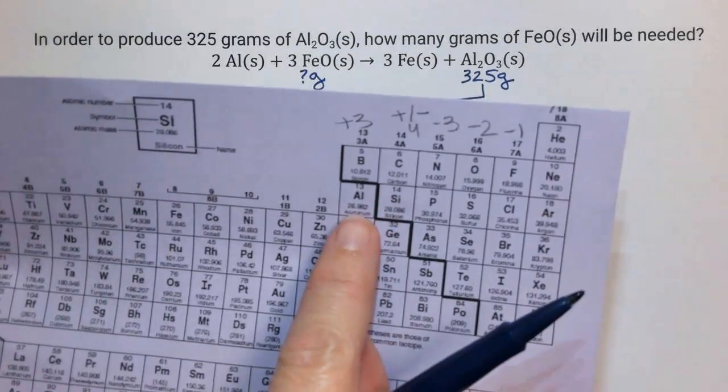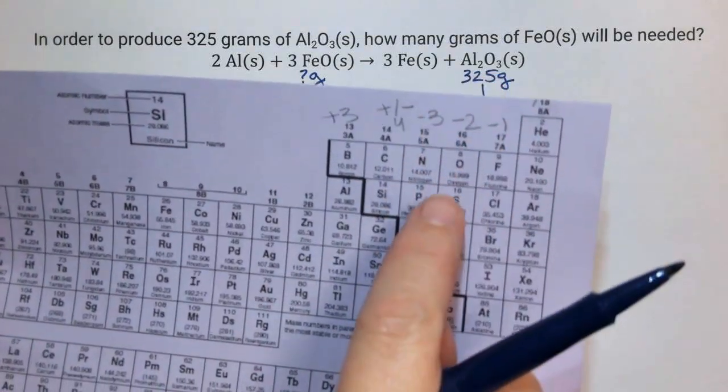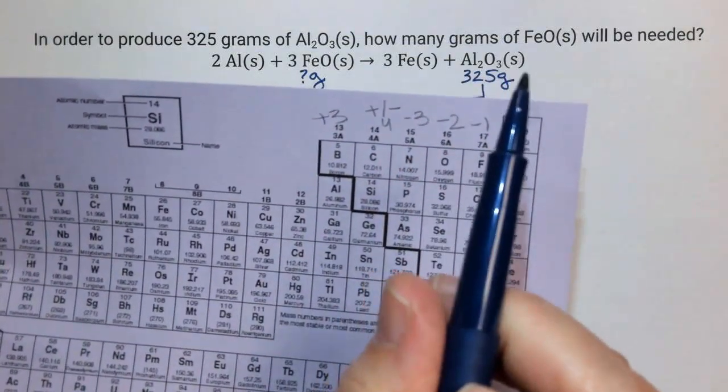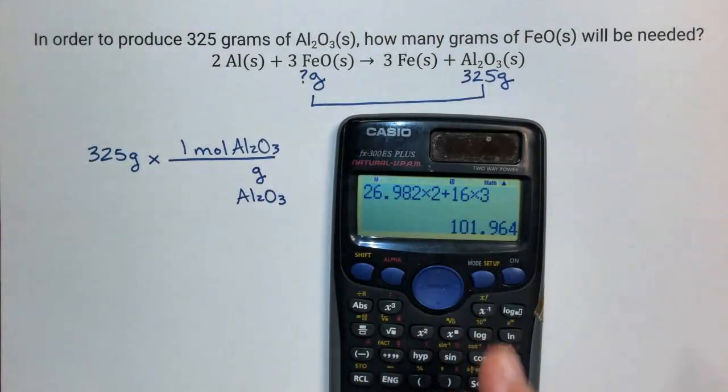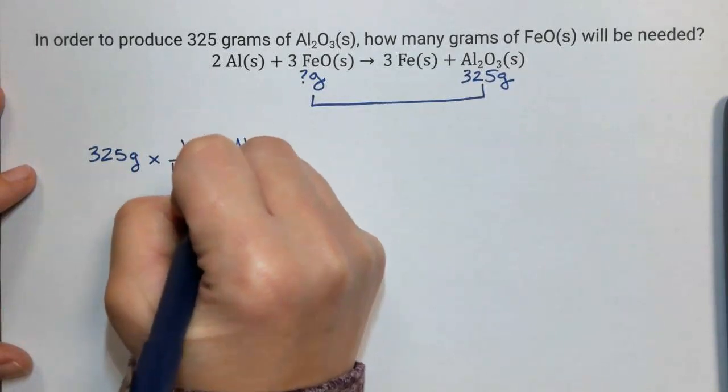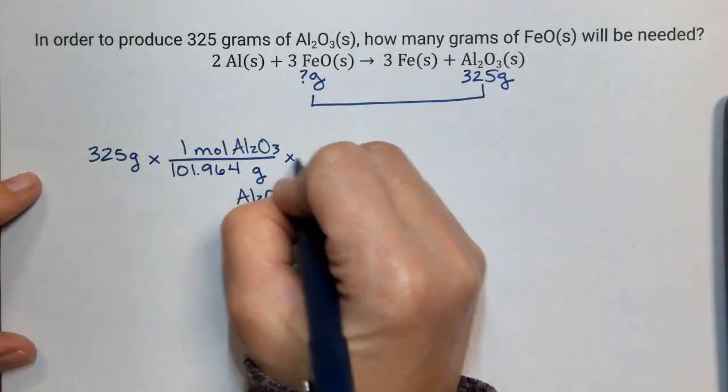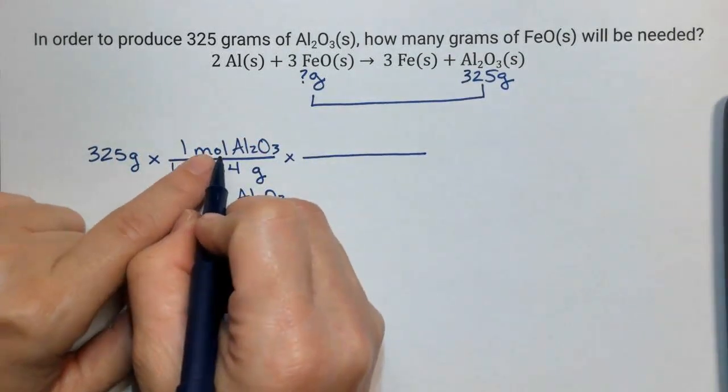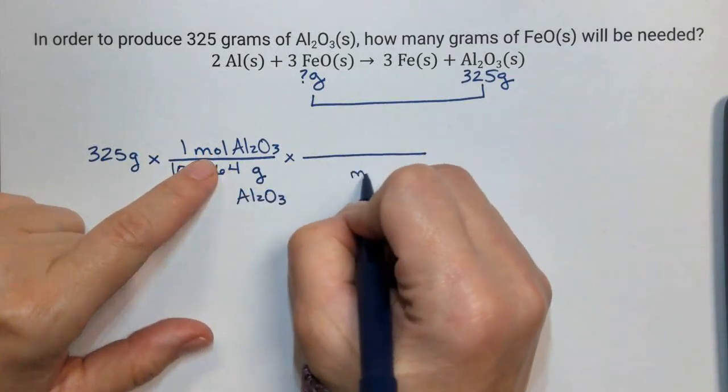I get aluminum times 2 plus oxygen times 3, and that gives me 101.964. Times, draw a line, bring down mole of aluminum oxide.